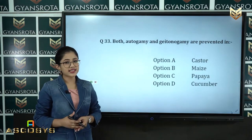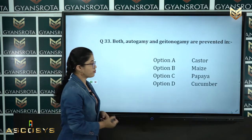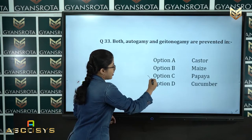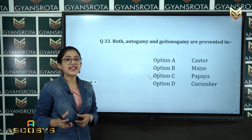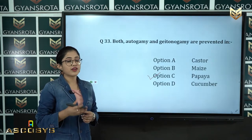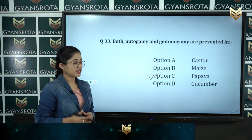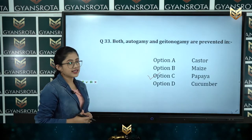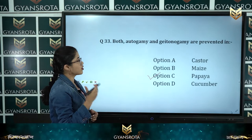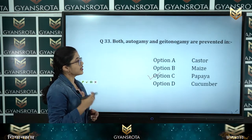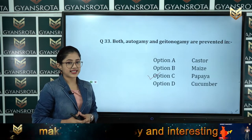The correct answer is option C, Papaya. In papaya, the male and female flowers are present on different plants. That is the reason both autogamy and geitonogamy are prevented.